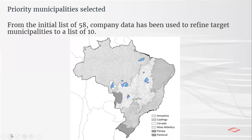The eventual geographic spread of municipalities selected in the Soy Buyers Coalition top 10 list again sit mostly within either the Matopiba region or the northern edge of the Cerrado biome habitat in Mato Grosso — municipalities still linked to high deforestation risk.